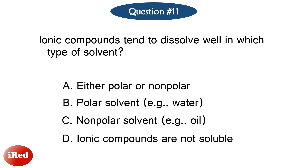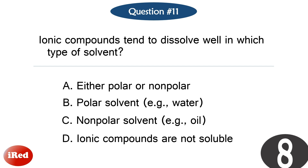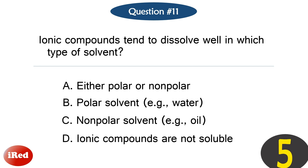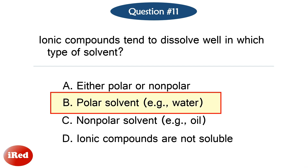Question number 11. Ionic compounds tend to dissolve well in which type of solvent? The correct answer is letter B, polar solvent, for example water.